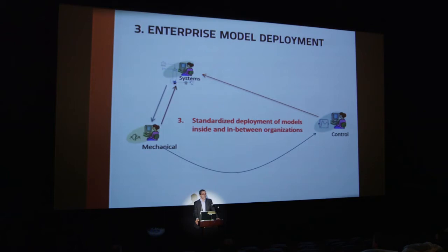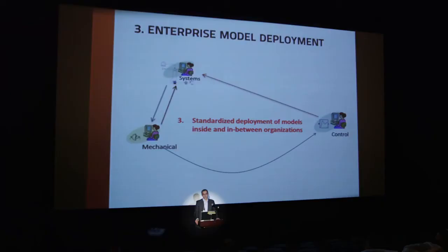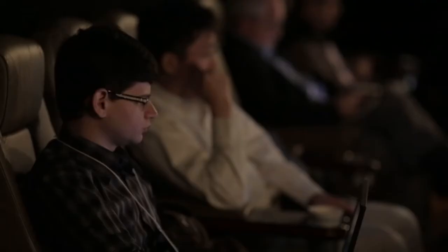The third point — and I think that's really one of the most important ones — is that developing models is actually a very labor-intensive and costly thing. What we want to achieve with FMI is to make it much easier to deploy model assets throughout the enterprise and the company. There's very often friction in processes between departments and in particular between suppliers and OEMs. A standardized interface and standardized encapsulated form of a model makes it much easier to reuse these models across departments and companies. Every supplier can give a plant model to an OEM, and the reuse of these models and efficiencies of the processes will be much improved.